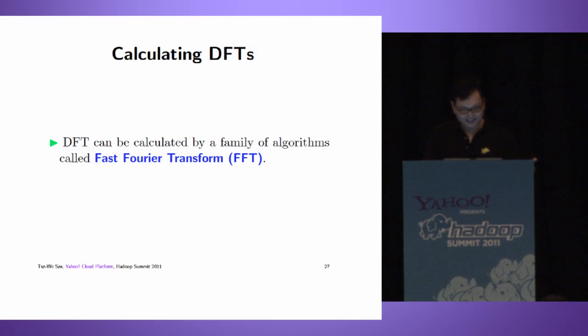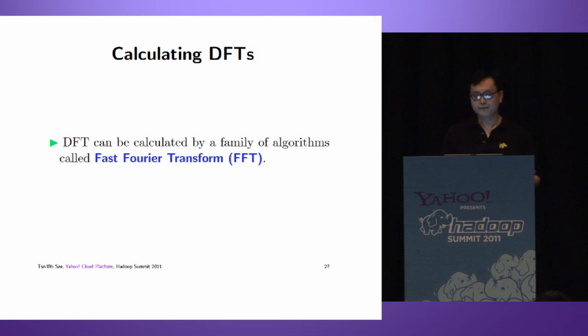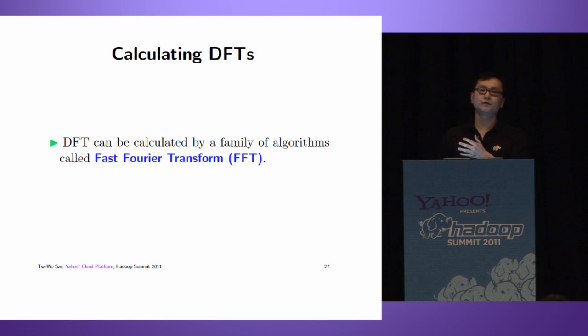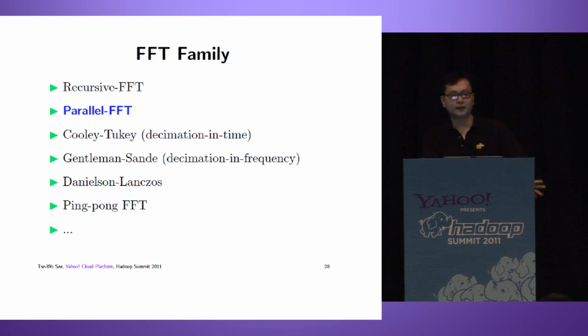How do we compute DFT? DFT can be computed by a family of algorithms called Fast Fourier Transform. DFT is the transform, FFT is the algorithm. Inside this FFT family, we have many varieties. Today we're going to talk about parallel FFT.